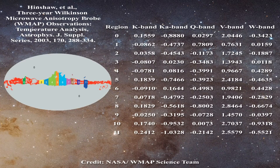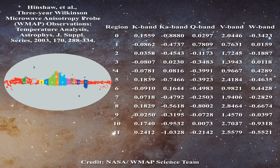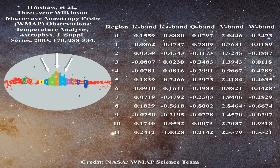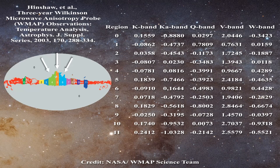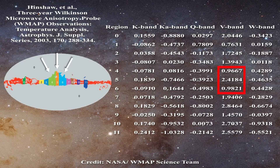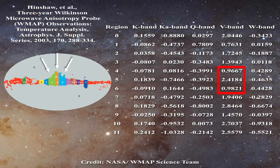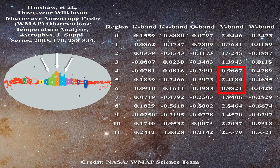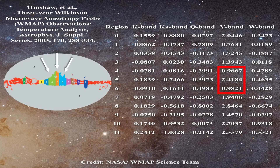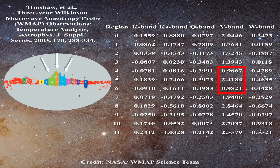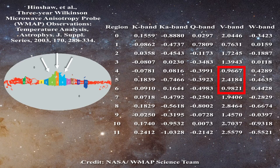But what is most amazing is the extent to which the coefficients vary from region to region. That in itself tells you that there are problems with this approach. Let us have a look at a couple of examples while focusing initially on regions 4, 5, and 6, which are located at the center of the galaxy. The coefficients for V band tell the story. Notice how the values are changing. For region 4, we had 0.9667. For region 5, we get 2.4184. And finally for region 6, we get 0.9821.